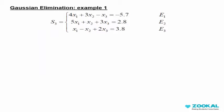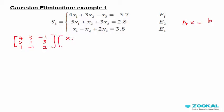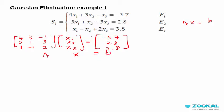Let's look at an example. We have this set of equations to solve. The first thing to do is to transform it into AX equals B matrix form. Then we use Gaussian elimination — we write A and B together.